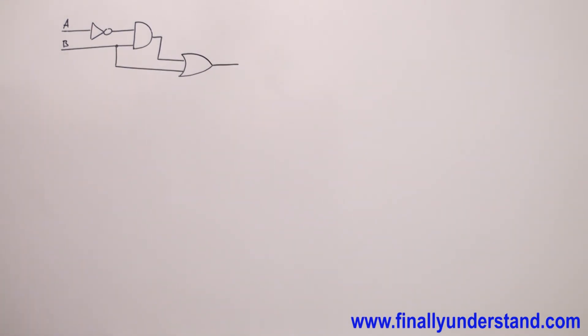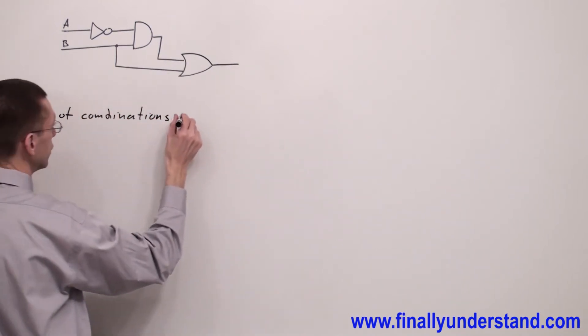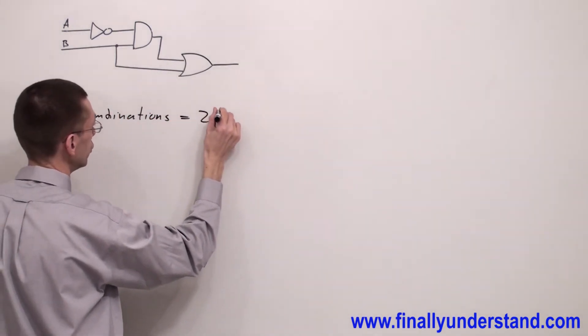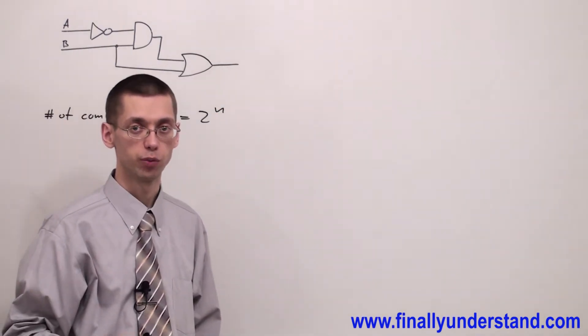In order to determine the truth table for this circuit, first we're supposed to check how many combinations I can apply to this circuit. How many inputs do I have? I have two inputs. The formula says number of combinations for a logic circuit like this is equal to 2^n, where n is the number of inputs.